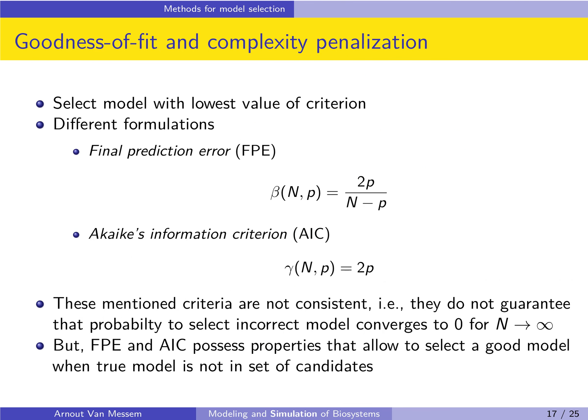There are different formulations for the complexity functions beta and gamma. One option is the Final Prediction Error, where we use 2p over N minus p. Another is Akaike's Information Criterion (AIC), where gamma equals 2p. AIC is one of the most commonly used methods for model selection. However, these two criteria are not consistent — even if N goes to infinity, there is no guarantee that the probability of selecting an incorrect model converges to zero. Both criteria are very simple, contributing to their applicability, and they possess properties allowing a good model to be selected even when the true model is not in the predefined candidate set.